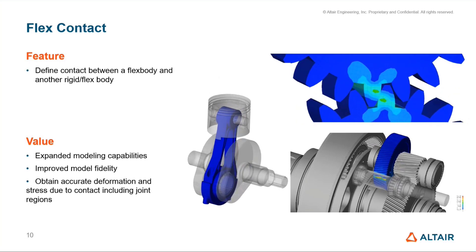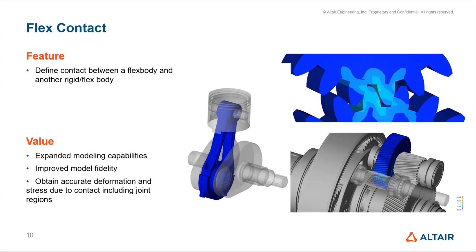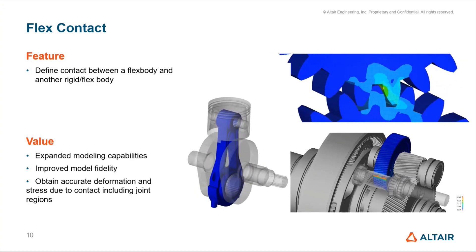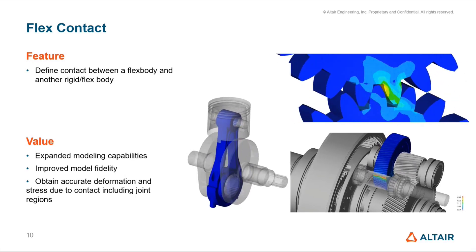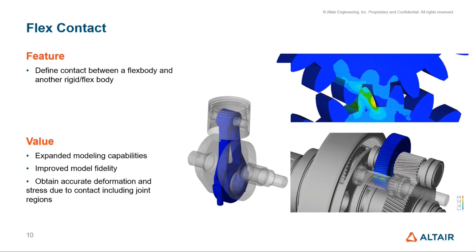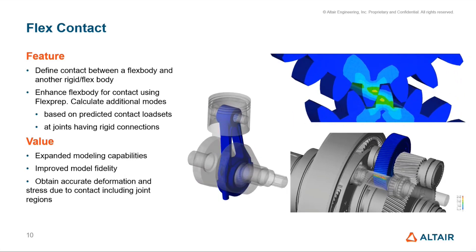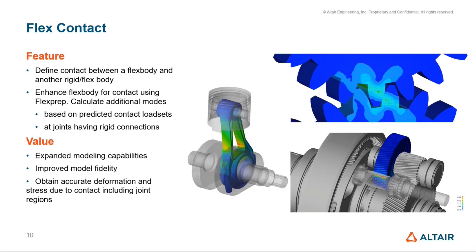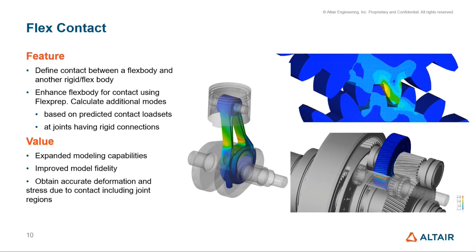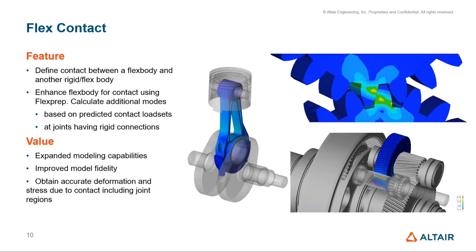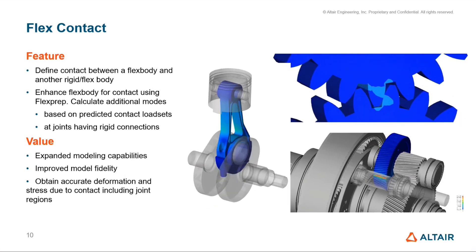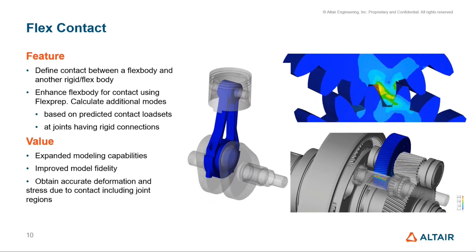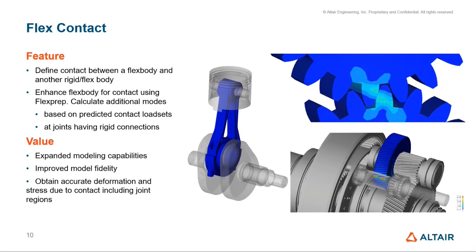Scott will talk about how it comes in Inspire Motion later. On the Motion View side, defining contact is not different than rigid contacts — the method and parameters are all the same. There are some extra capabilities mainly to enhance the FlexBody so that it is conducive for contact. There is a capability in FlexPrep to enhance the modes based on predicted contact loads or certain rigid connections. RB2 spiders in the model can be converted, and modes can be added so that area can come in contact.